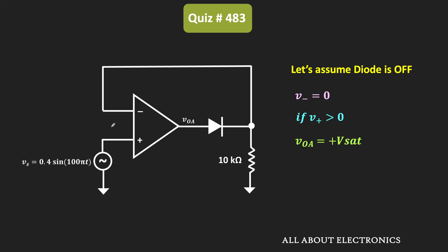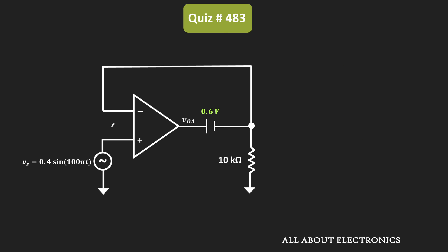And in the question, we have been given that in the forward bias condition, the voltage drop across the diode is equal to 0.6V. So now, since the diode is in the on condition, there is a closed loop in the circuit. That means now the circuit will operate in the closed loop condition, or in other words, there is a negative feedback in this circuit.